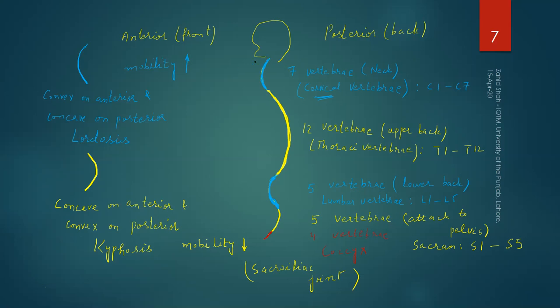At the proximal end, the backbone attaches to the lower part of the skull. At the distal end, it forms a joint with the pelvis. So the backbone is sort of the joining point between your skull and the lower extremities. You will remember that this is part of the axial skeleton — the central part of your skeletal system.